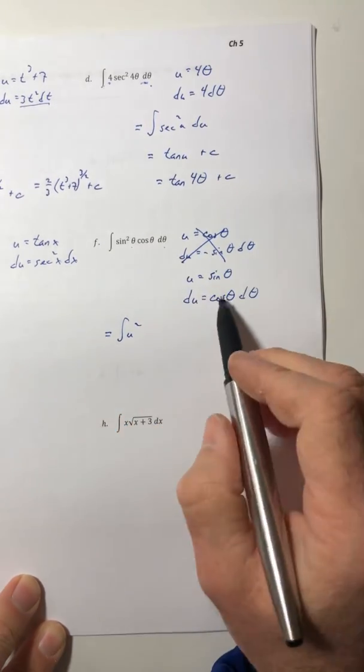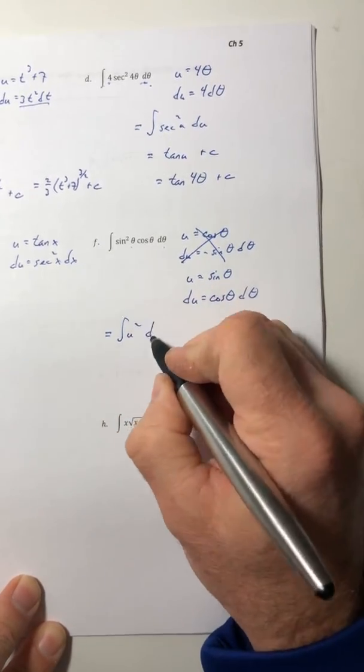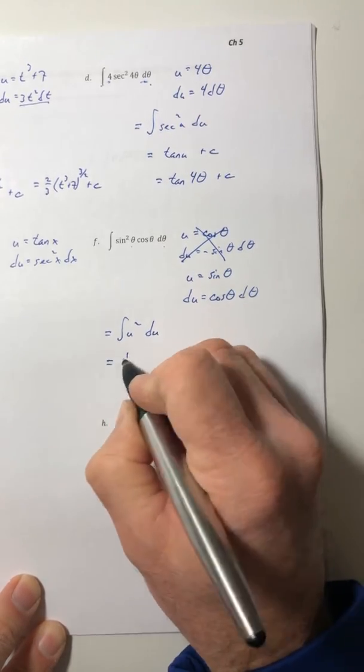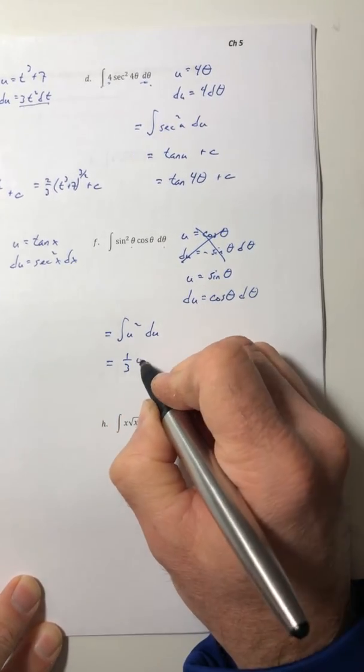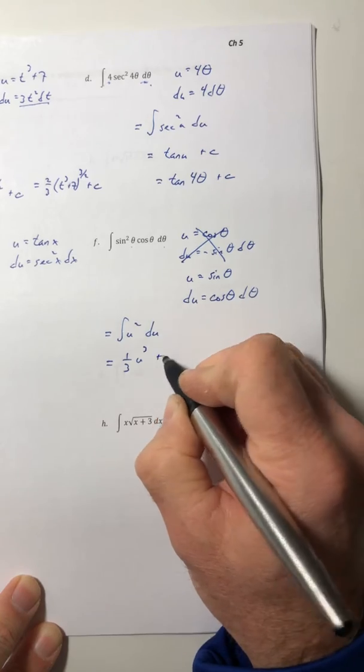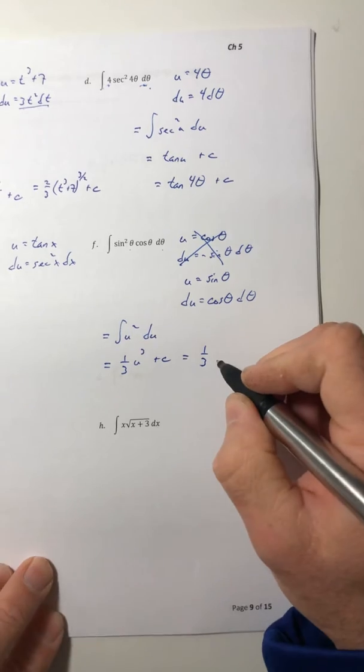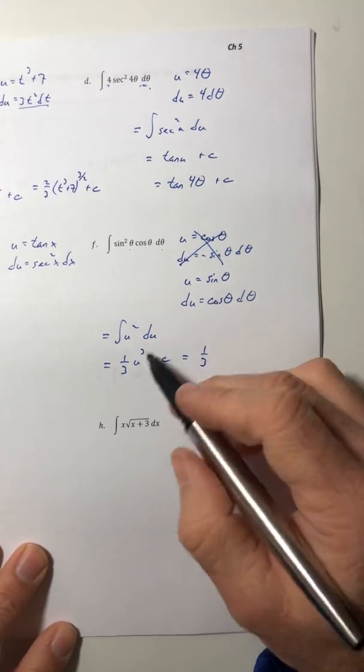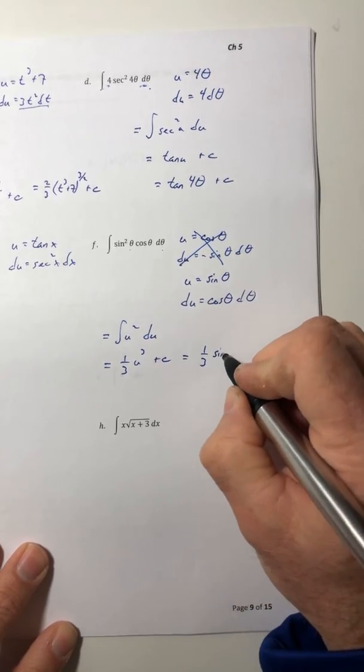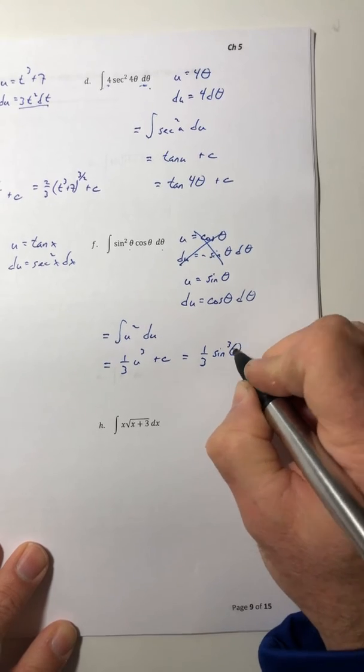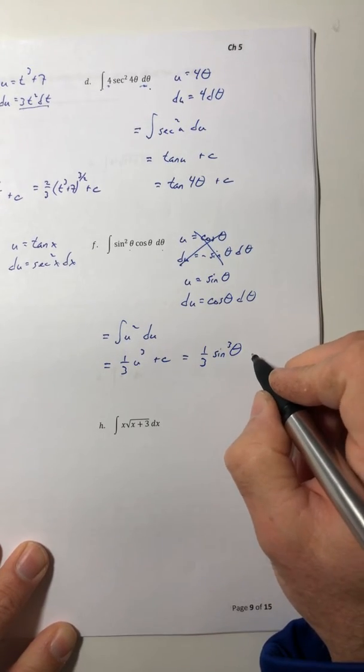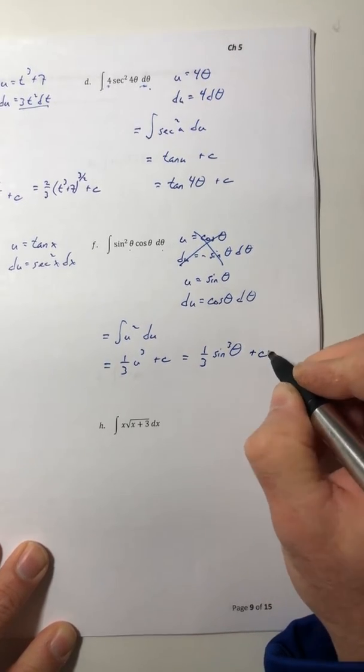So one third u to the third, and then change it back into your original variable. So the u was sine of θ, so it becomes one third sine to the third of θ plus c.